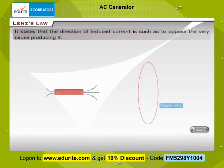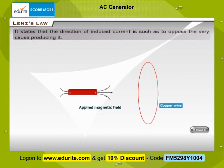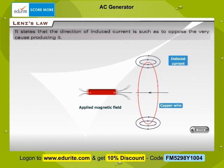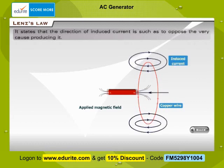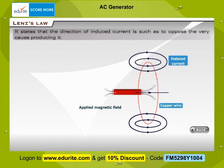Lenz's law states that the direction of induced current is such as to oppose the very cause producing it.